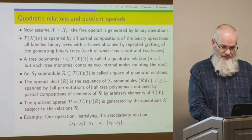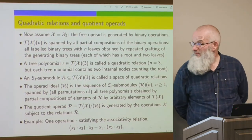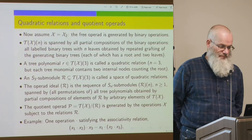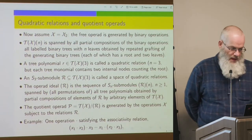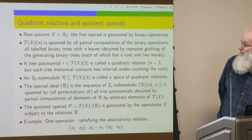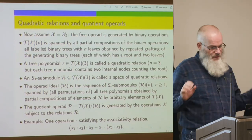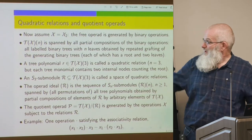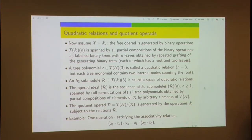The reason I talked about free operads is because I want to talk about operads generated by certain operations satisfying certain relations — this is analogous to ideals in rings and quotient rings. Let's simplify drastically: assume X equals X_2, so the operad is generated by binary operations. Then T(X)(n) is spanned by all labeled binary trees with n leaves obtained by repeated grafting of the generating binary trees.